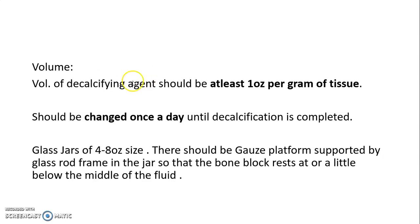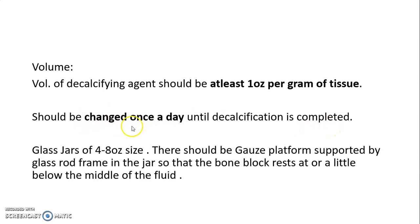The volume of decalcifying agent required is at least one ounce per gram of tissue, and it should be changed once a day until decalcification is completed. Glass jars of 4 to 8 ounce size should be used, with a gauze platform supported by a glass rod frame inside the jar so that the bone block rests at or just below the middle of the fluid.